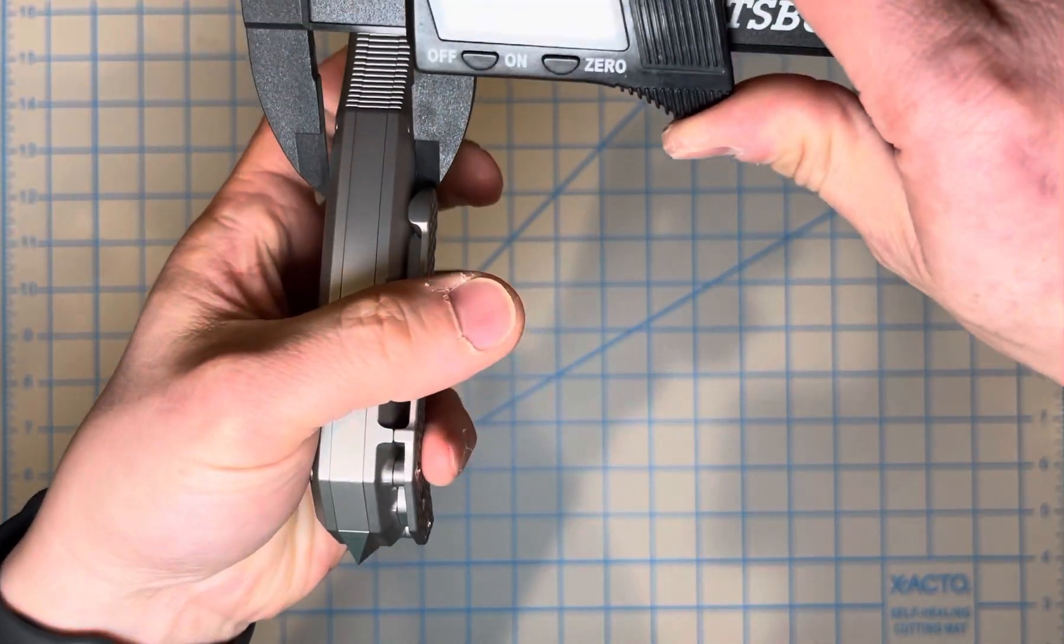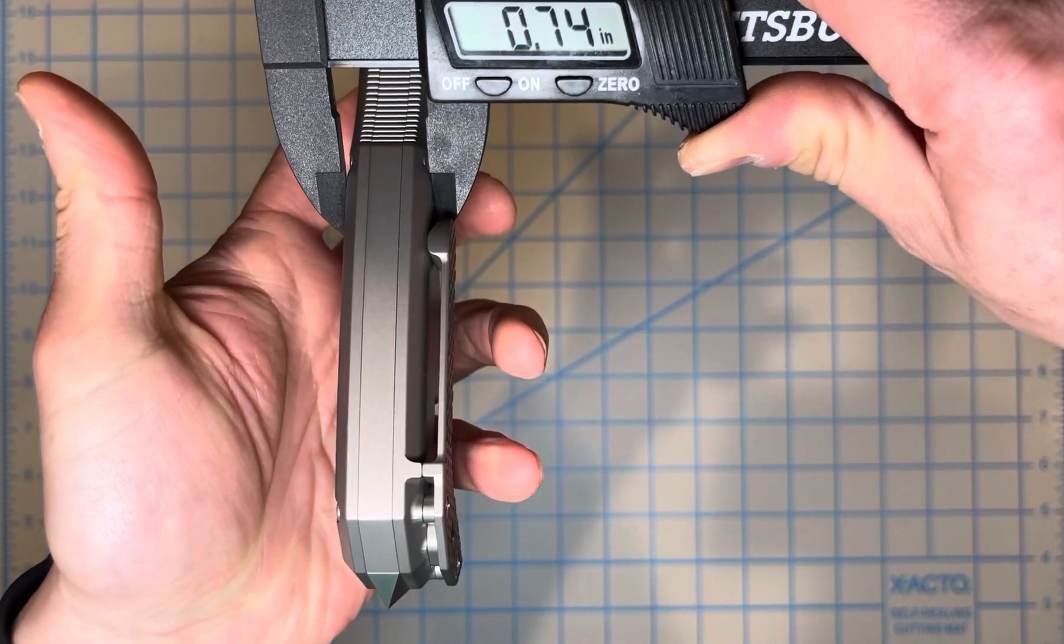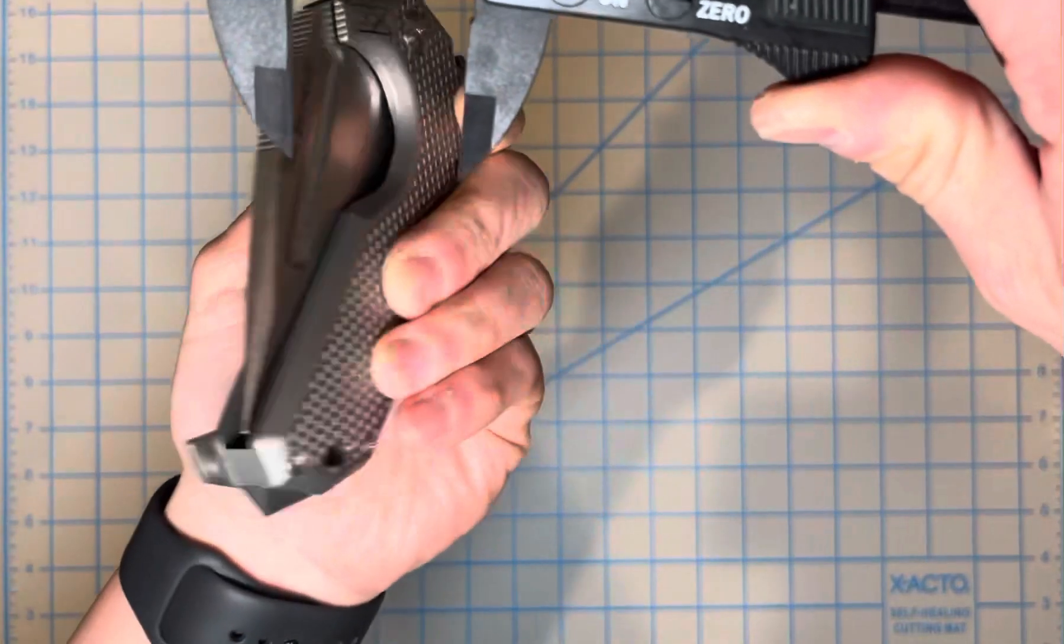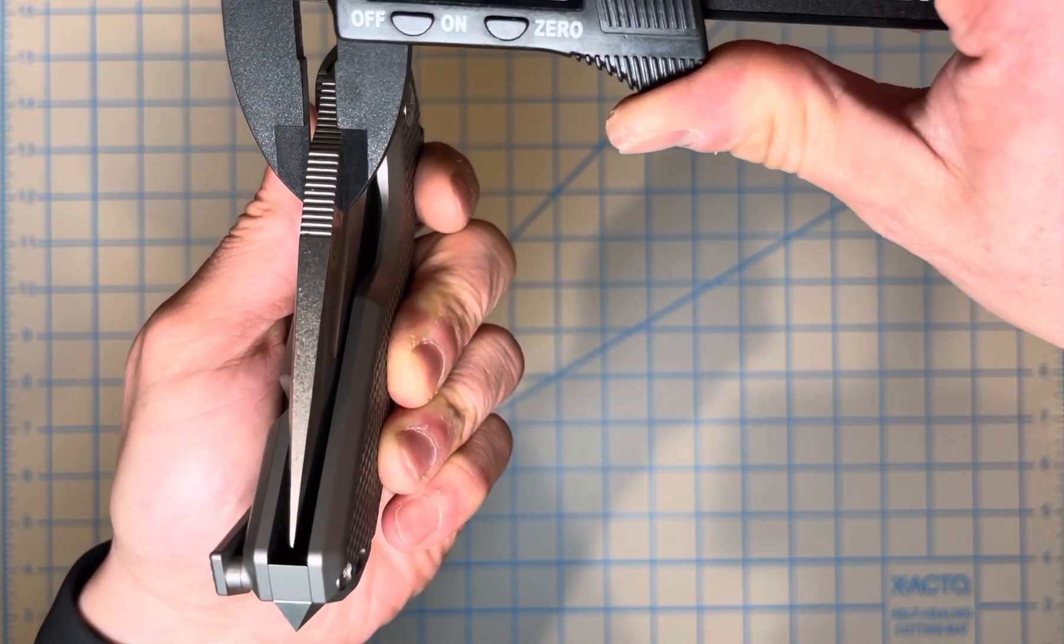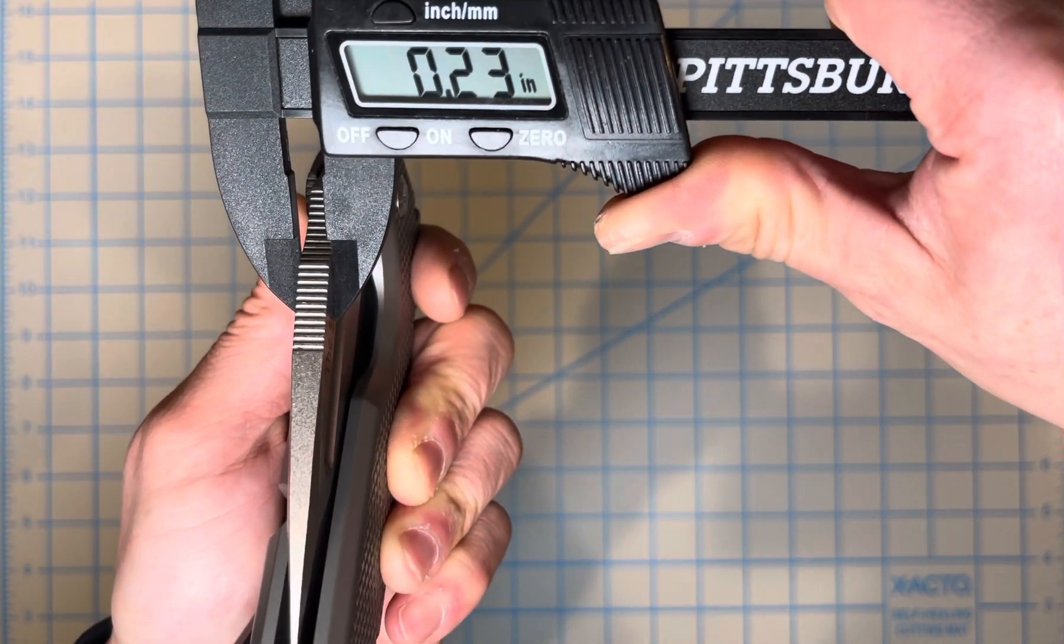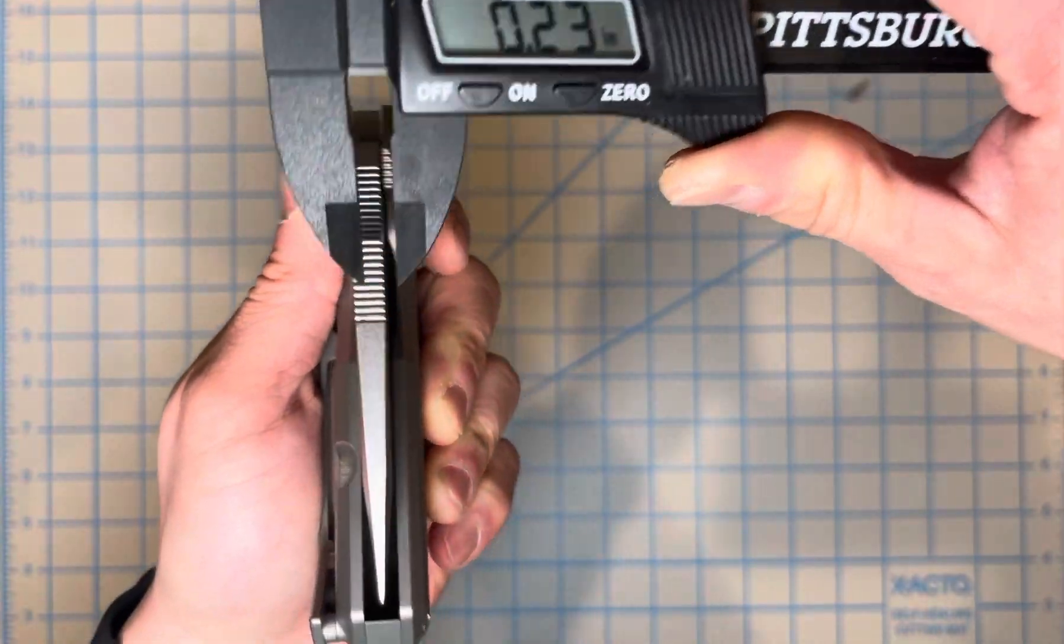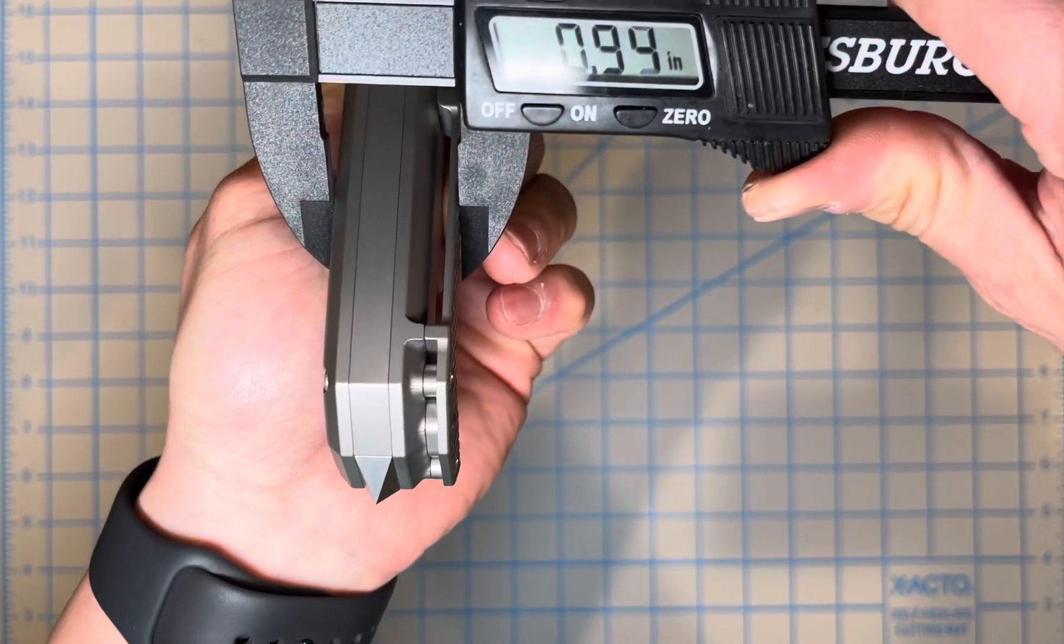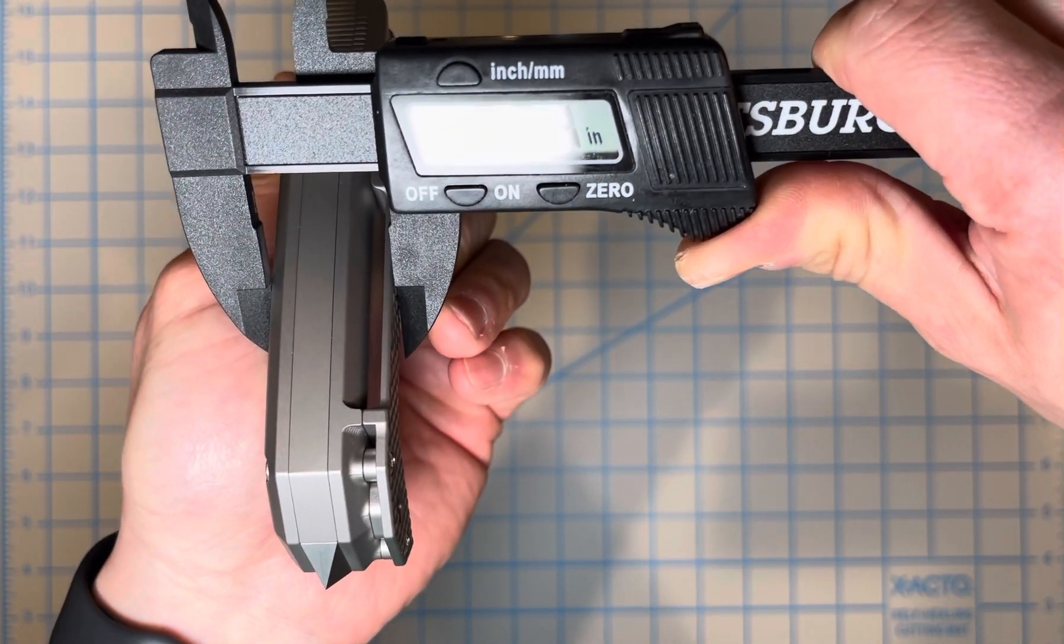The thickness of this, the whole knife, the handle part is 0.74 inches. The thickest part of the blade spine is 0.23 inches. Actually the thickest part with the clip is actually 0.94 inches.